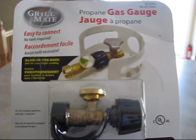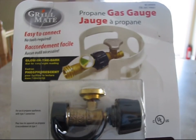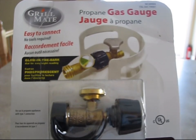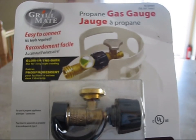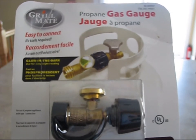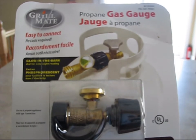This Grill Mate propane gas gauge is easy to read. It's got a glow-in-the-dark dial, which is fantastic for those late-night grills or for knowing if you have to go refuel your propane tank in the morning. It is all brass construction and is ideal for barbecue grills, and even better for RVs and travel trailers.